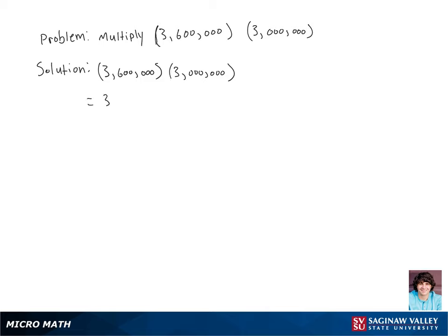So for the first one, we're going to get 3.6 times 10 to the sixth power. And for the second one, we're going to get 3.0 times 10 to the sixth power.